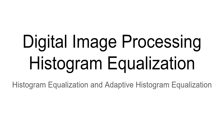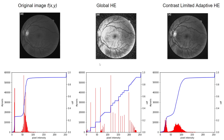Hello everybody. In this video I would like to show you how to apply histogram equalization in Python — both the global histogram equalization and adaptive histogram equalization. I have an image of an eye: this is my original image, this is the result of global histogram equalization, and this is the result of adaptive histogram equalization. Below is the image histogram of pixel intensity as well as the cumulative density function.